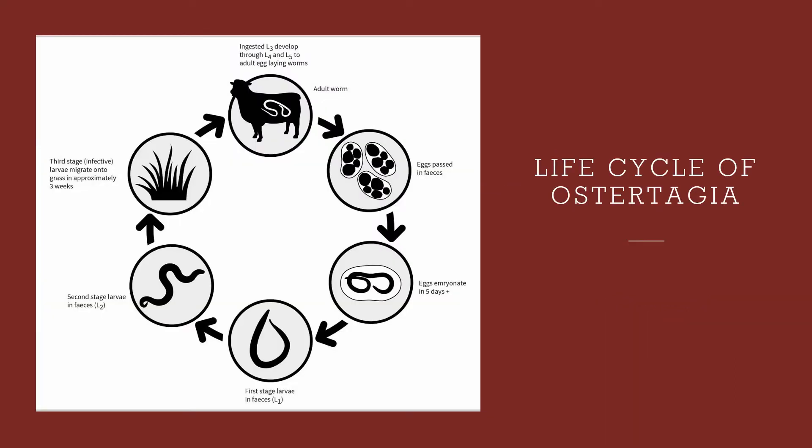Here I have presented an actual image of the life cycle of the parasite Ostertagia. First, we have an adult worm that leaves eggs. The eggs are passed in the feces. Then the eggs embryonate in five or more days. Then we go to the next stage, which is the first stage in feces, then it converts to the second stage. Then we go to the third stage where they migrate onto the grass approximately in three weeks. Lastly, we have the cow or any ruminant. They ingest the larvae 3, which then develops to larvae 4 and larvae 5. Then lastly, we have the adults laying eggs all over again.